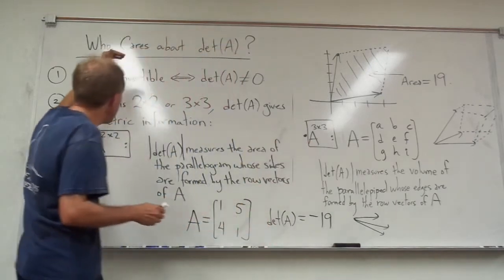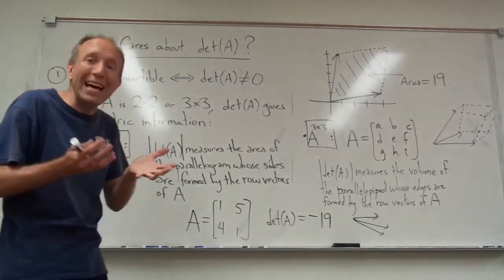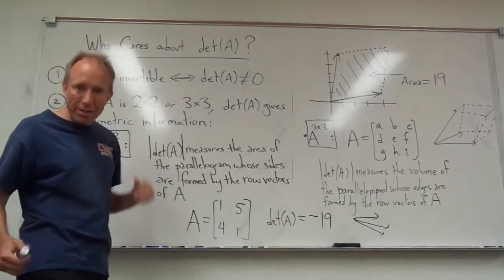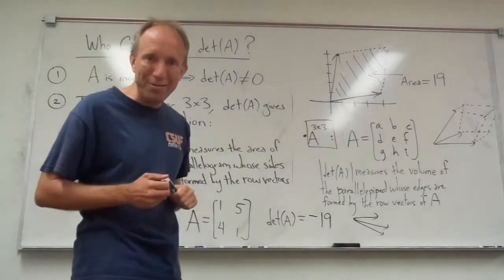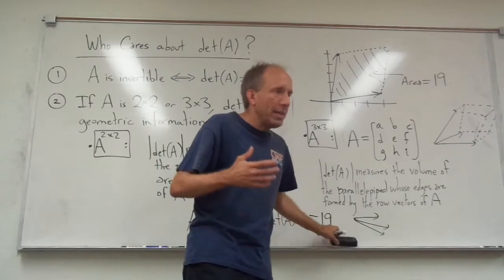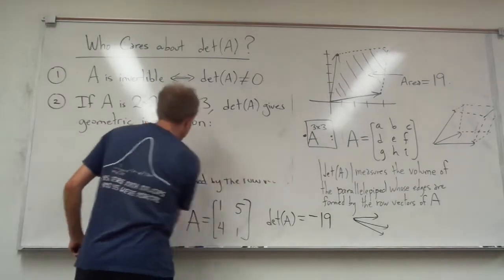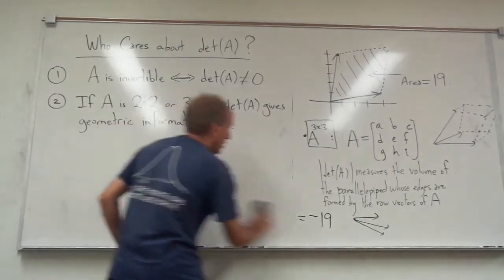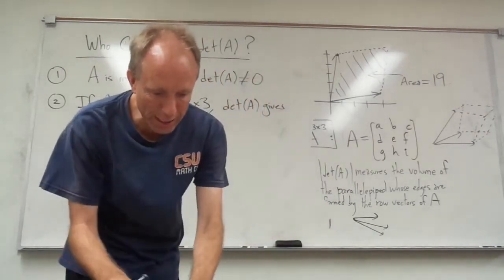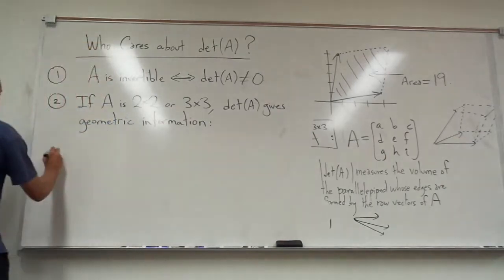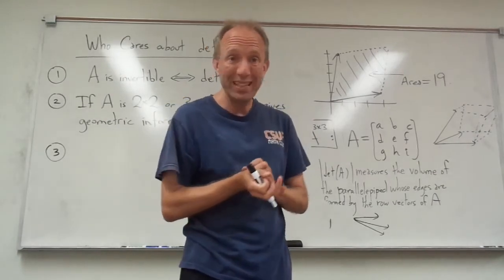There is a second reason why the determinant is useful, is that the value, the number that you get for a 2x2 or a 3x3 matrix, it's telling you about the area or volume, respectively, that is created by the row vectors of that matrix. I'm going to erase this now and give you another reason why we care about the determinant, which has to do with actually another formula for finding A inverse.